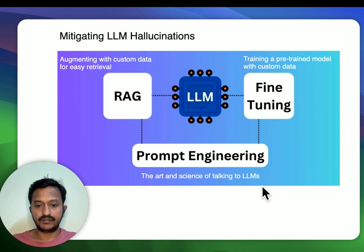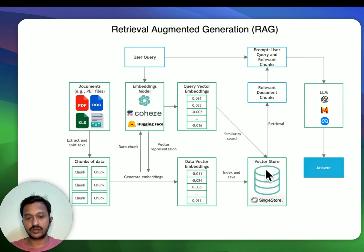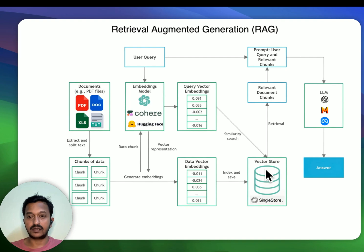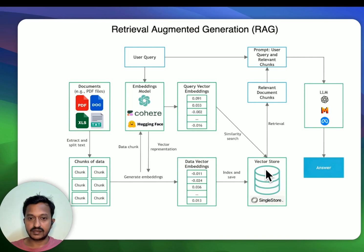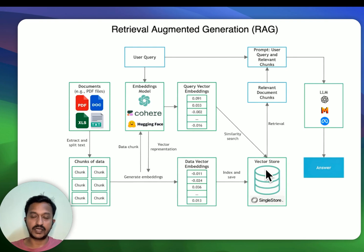So let's talk in depth about Retrieval Augmented Generation. We basically saw three strategies to mitigate LLM hallucinations: fine-tuning, prompt engineering, and retrieval augmented generation. Among all these strategies, RAG is considered one of the most sophisticated ones.